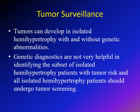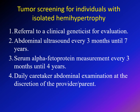Tumor in cases of isolated hemihypertrophy can develop with or without genetic abnormalities. Even if a case of isolated hemihypertrophy does not have a genetic abnormality, it is still at higher risk of developing abdominal tumors. Therefore, genetic testing alone is not enough as a screening method — patients should also undergo other methods for detecting tumors.